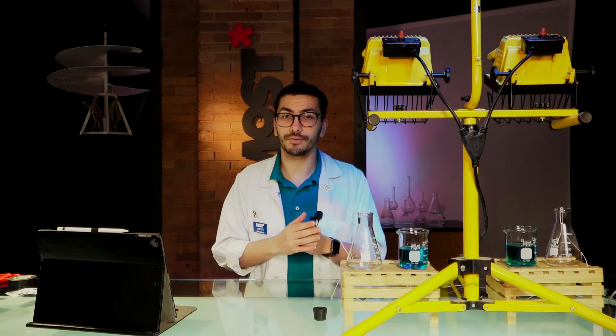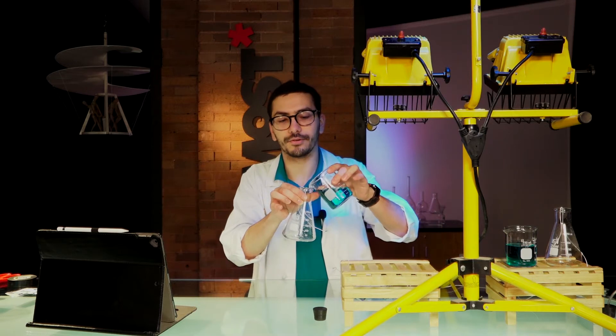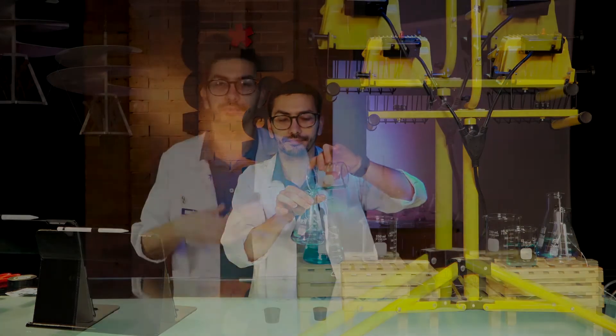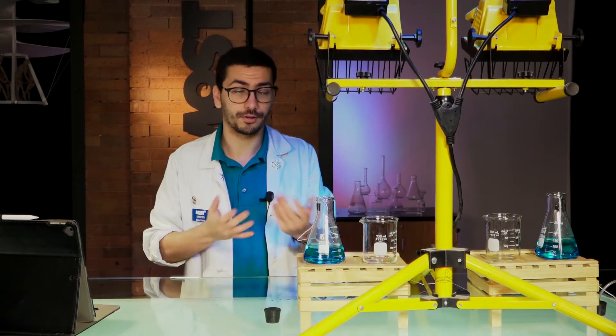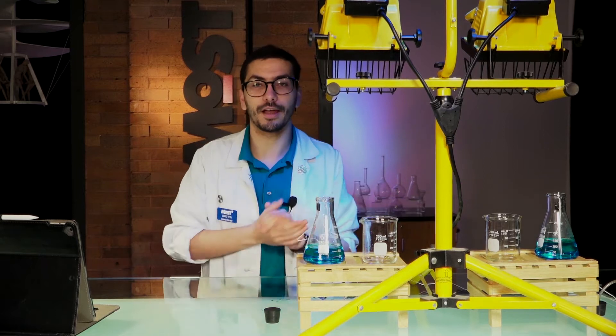What we're going to be doing for our experiment is we're going to take our Erlenmeyer flask and fill it with 150 milliliters of water. Now that we have our water in our Erlenmeyer flasks, we're going to be measuring the temperatures of the air inside of them.